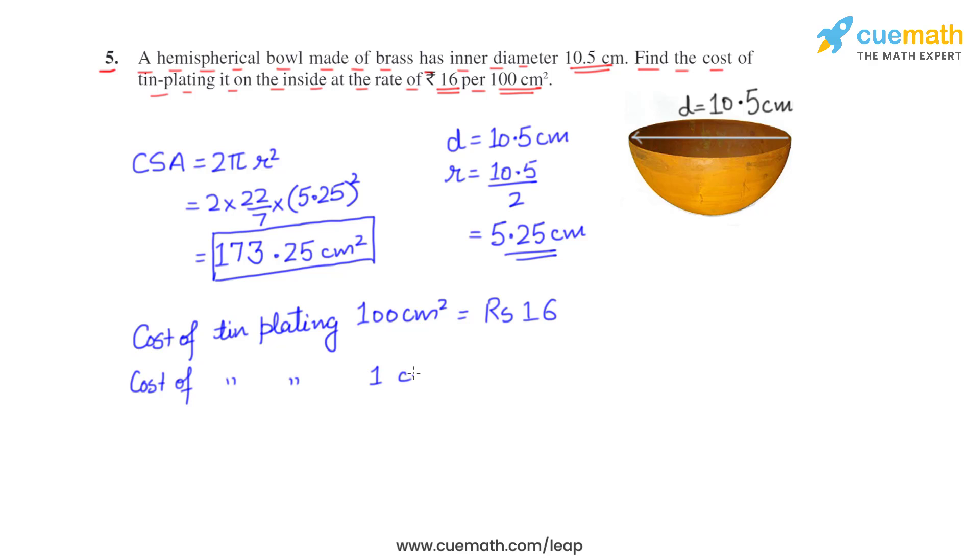The cost of tin plating 173.25 square centimeters of area will be 16 by 100 multiplied by 173.25. The answer comes out to be rupees 27.72.